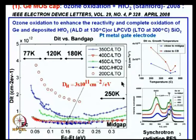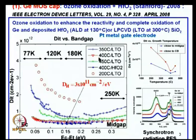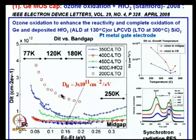In the Stanford approach, ozone was used to oxidize a freshly cleaned germanium surface at different temperatures: 200, 350, 400, and 450°C. In each case at 200, 350, and 400°C, they performed oxidation and deposited a low-temperature oxide — LPCVD SiO2 at 300°C. They found the interface trap density DIT across the band gap kept reducing as oxidation temperature increased.